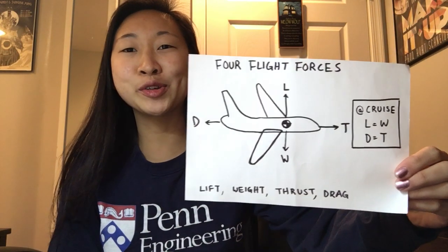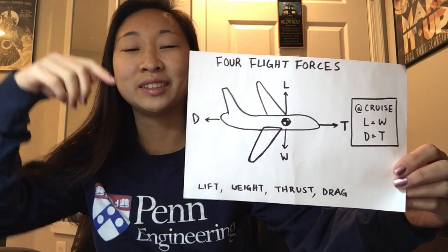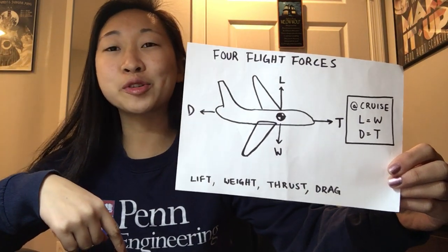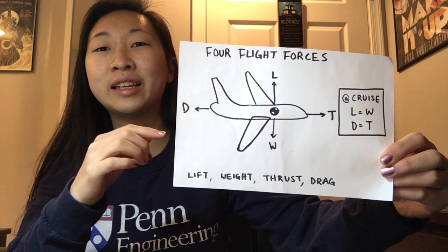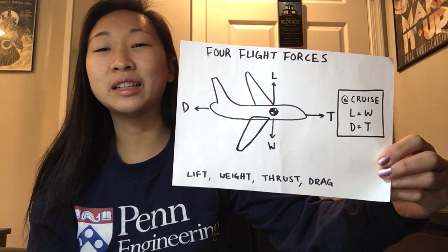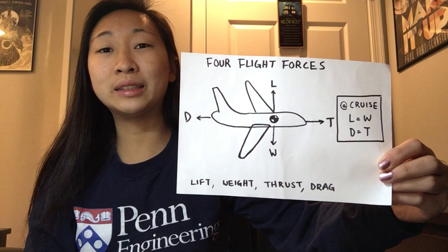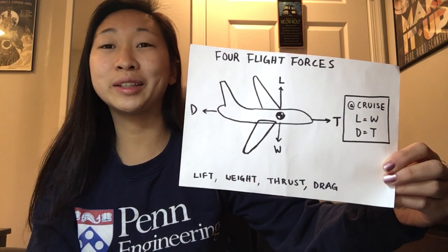There are four flight forces. There's lift, weight which is force due to gravity, thrust, and then drag which opposes motion. At cruise, these forces are balanced. Lift equals weight and drag equals thrust.